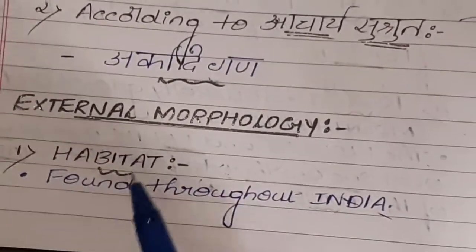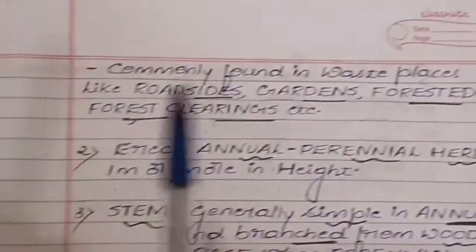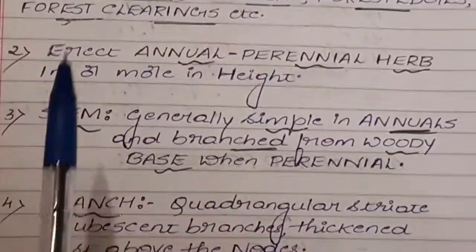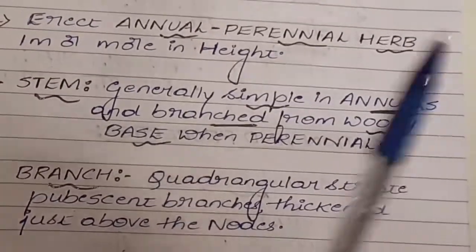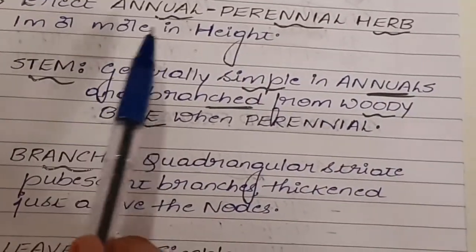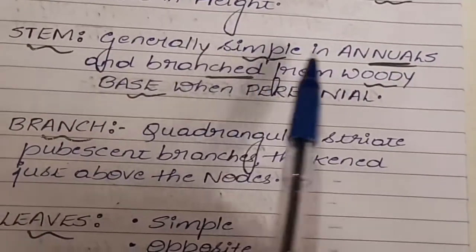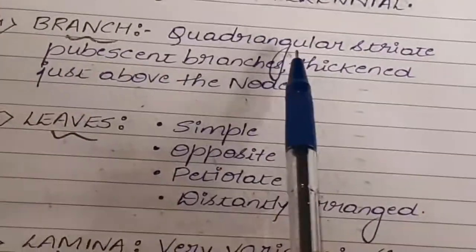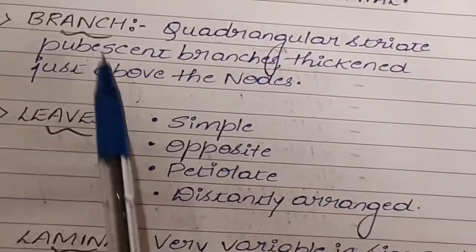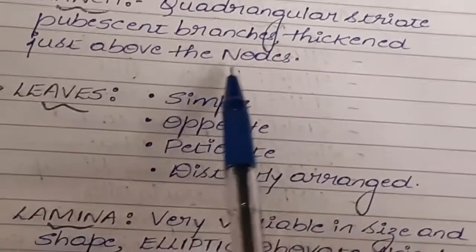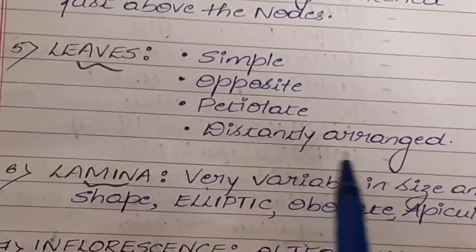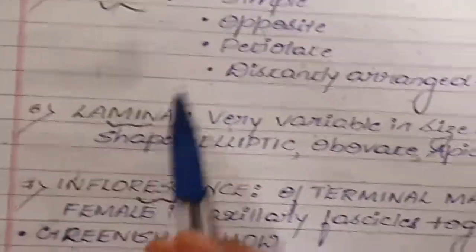Coming to external morphology of the drug — Habitat: it is found throughout India, commonly in waste places like roadsides, gardens, forest edges, and forest clearings. It is an erect annual or perennial herb, one meter or more in height. The stem is generally simple in annuals and branched from a woody base when perennial; branches are quadrangular, striate, and pubescent, thickened just above the nodes.